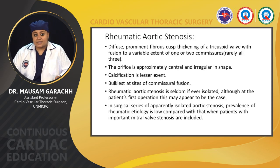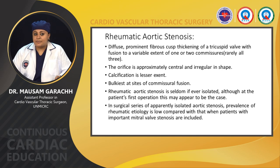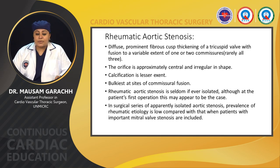Rheumatic aortic stenosis features diffuse prominent fibrous cusp thickening of the tricuspid valve with fusion to a variable extent of one or two commissures, rarely all three. The orifice is approximately central and irregular in shape. Calcification is of lesser extent and bulkiest at the site of commissural fusion. Rheumatic aortic stenosis is seldom isolated, though at the patient's first operation this may appear to be the case.